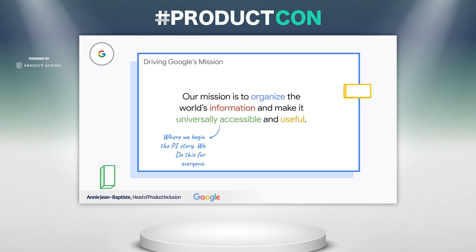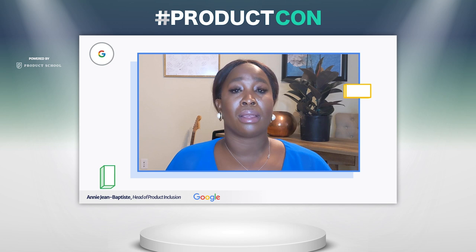Google's mission is to organize the world's information and make it universally accessible and useful. Product inclusion really leans into the universal part. We have billions of users all over the globe, and we want to make sure that Google is helpful to them in the moments that matter most.